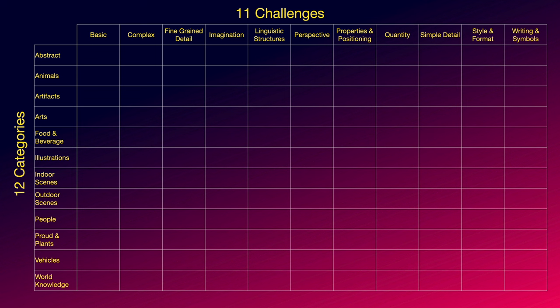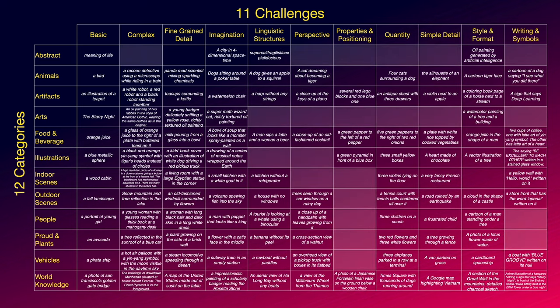So here we have 12 categories: abstract, animals, artifacts and so on, as well as 11 challenges: basic, complex, fine-grained detail and so on. For each category and each challenge I used a prompt from the Party Prompt matrix, wherever it made sense, and then I created images with all these prompts for all models.